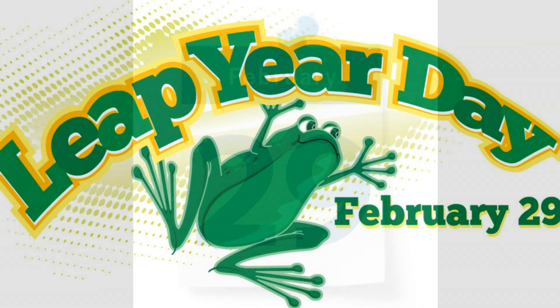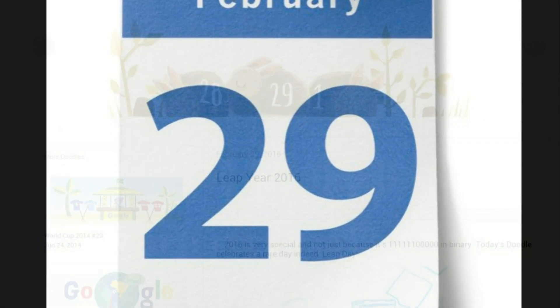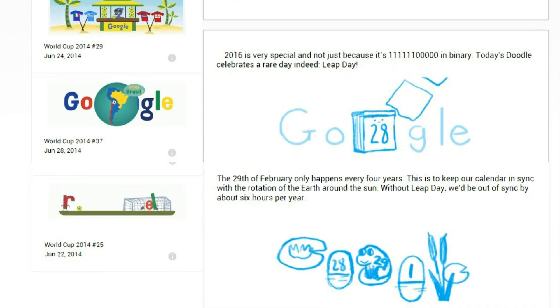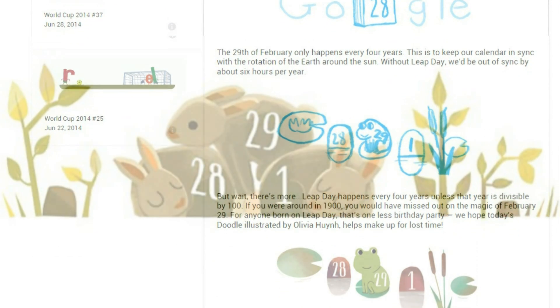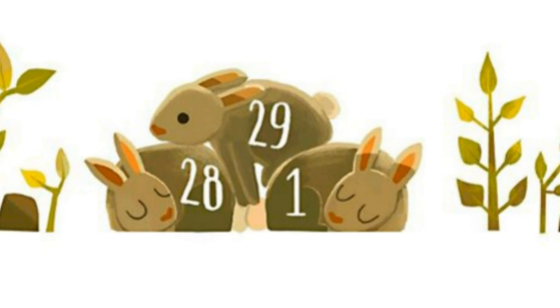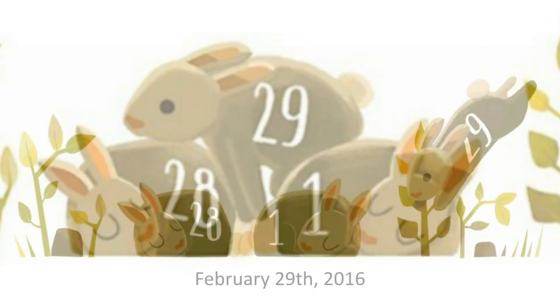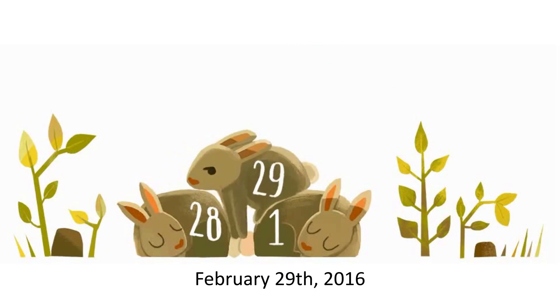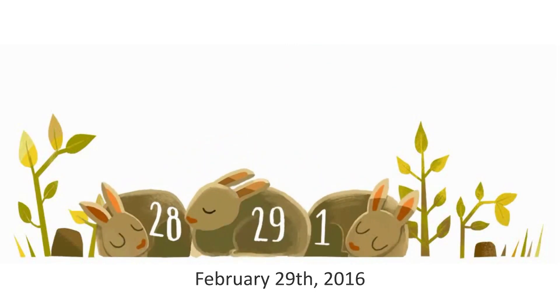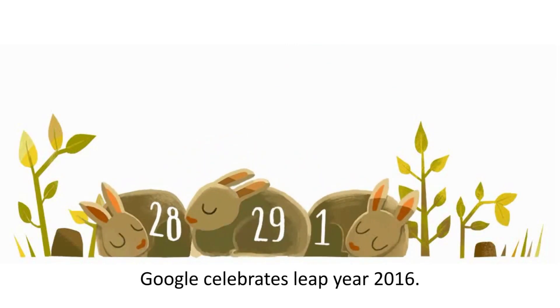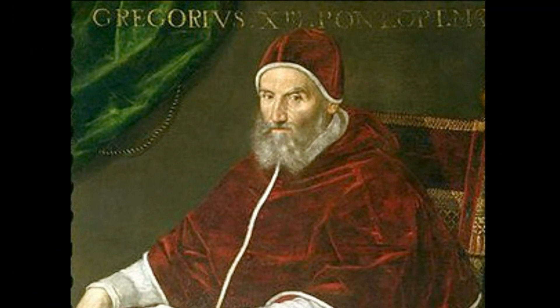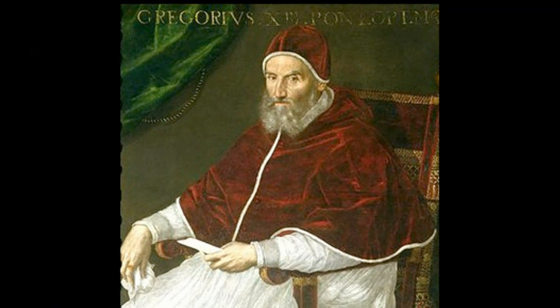has 366 days instead of 365. Google celebrates the extra day with an adorable animated Google Doodle featuring hopping bunnies by artist Olivia Wynn. A leap year, where an extra day is added to the end of February every four years,